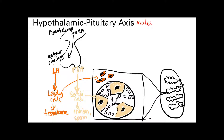Starting with the male axis: at the hypothalamus we get pulsatile GnRH secretion. It's important to emphasize that it must be pulsatile — this is what leads to activation of the anterior pituitary gland. If it is constant secretion, you actually get inhibition.